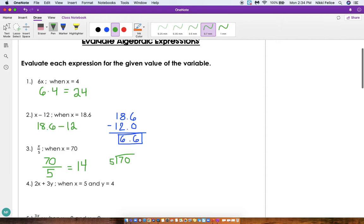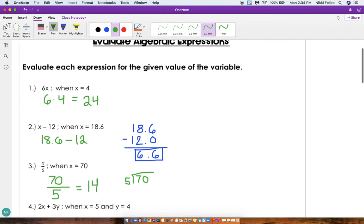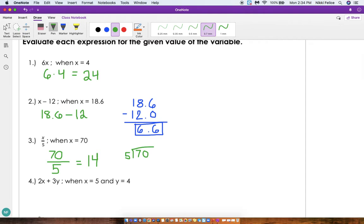Number 4 says 2x plus 3y. Now there's two variables in this expression. That's okay. x is going to equal 5 and y is going to equal 4. So this is 2 times x, so we're going to be doing 2 times 5 because we're using 5 for x, and then plus 3 times 4. Now of course we need to multiply before we can add. We always follow order of operations. 2 times 5 is 10, 3 times 4 is 12. 10 plus 12 is 22. So this is how we evaluate expressions.